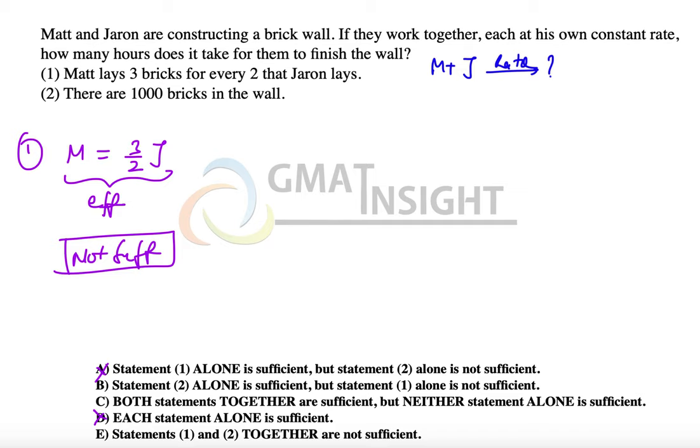The second statement gives us that there are 1000 bricks in the wall. So now we know the total work equals 1000 bricks, but we do not know the rate. Therefore, this is also not sufficient to answer the question. Option B is out. Now we come to the combination of the two statements.